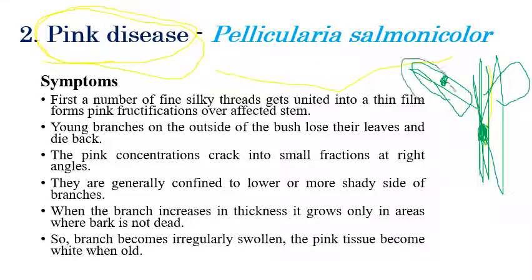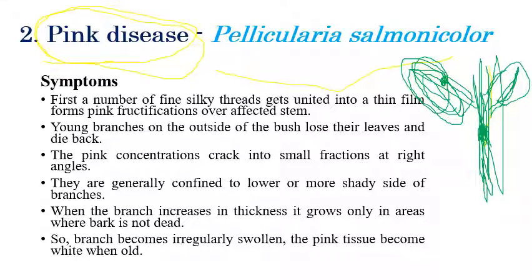Once pink fructifications appear, the leaves show dieback symptoms or wilting symptoms. In later stages, the branches increase in thickness. This disease appears particularly in shady areas — the more shade present, the greater the severity compared to leaves exposed to sunlight. The pink color tissues eventually become old and white color discolorations can be observed.